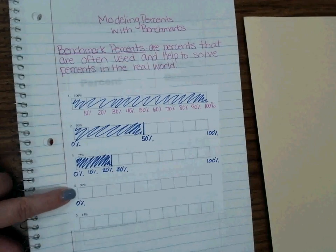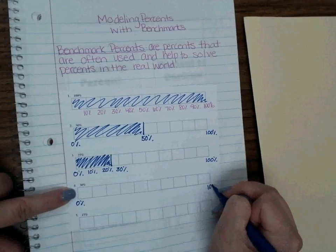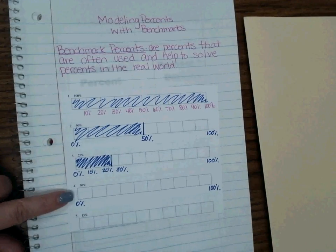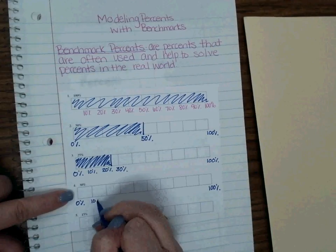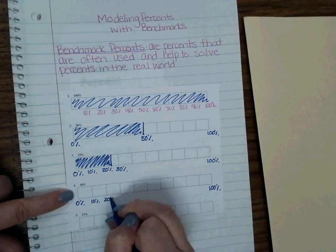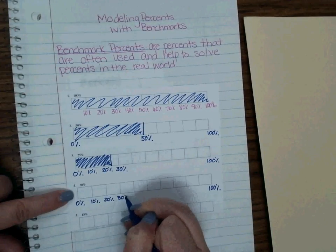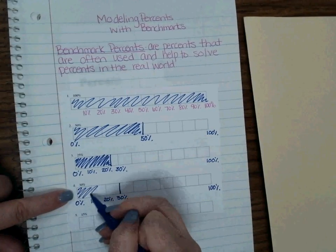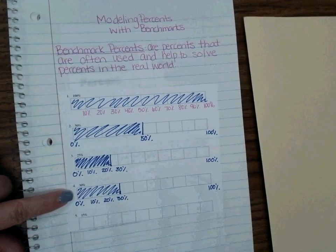Okay. We're going pretty quick through this. 30 percent. What can we use for a benchmark if we have 30 percent, Ms. Sorrells? We could still use the 10s. Okay. So I have 10 percent, 20 percent, 30 percent. And I don't really have to go any further. No. Okay. Very good.